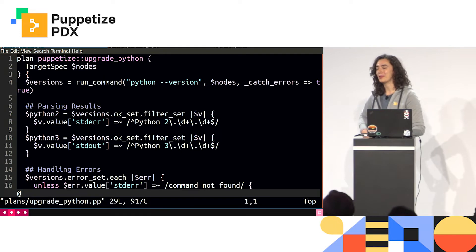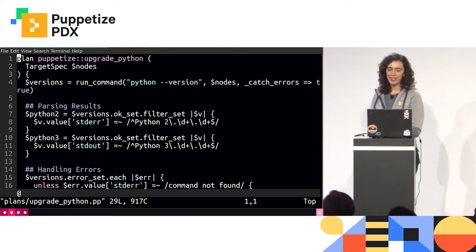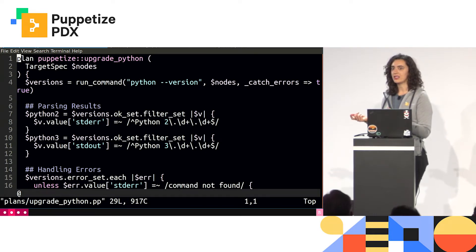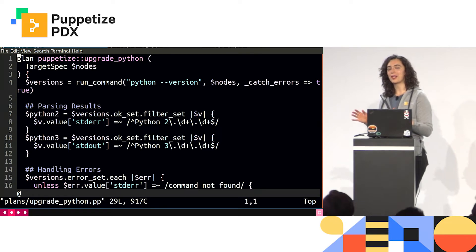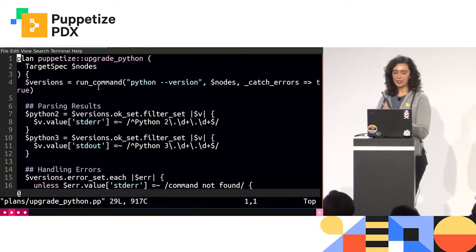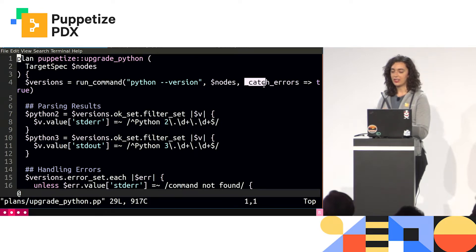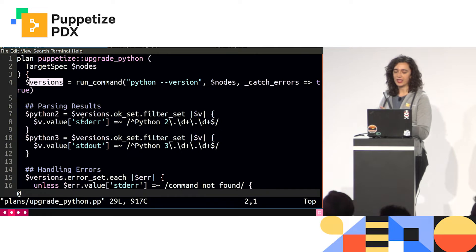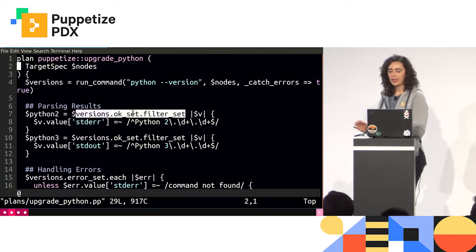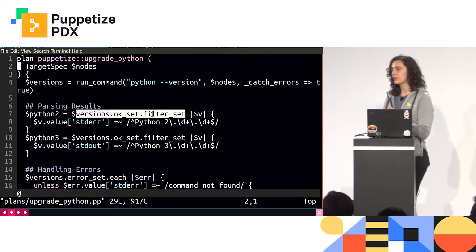I'll show this using a plan I wrote for upgrading Python. Python 2 is end-of-lifing January 1st, 2020, so I wrote a plan that checks if Python 2 is the default Python installed, and if so, installs Python 3 and sets that as the default. I have my run command checking the Python version with catch_errors, saving that to a variable. With that result set object, I can get the set of nodes that succeeded — everything that did not error — and filter that.